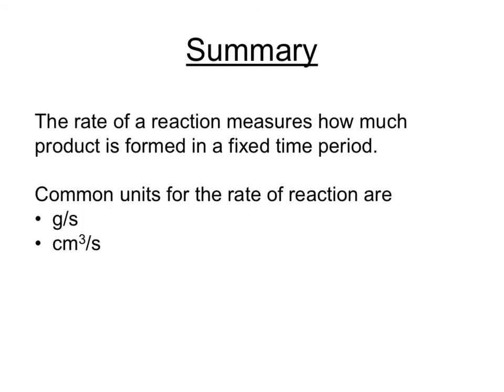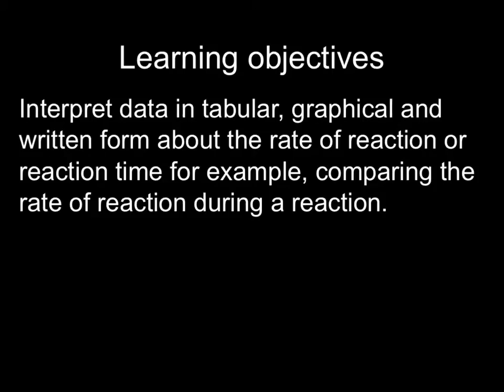And so in summary, the rate of the reaction measures how much product is formed in a fixed time period, or per second. And common units for rate of reaction are grams per second and cubic centimetres per second, where there's a gas involved. The next thing you need to be able to do is to interpret graphs of chemical reactions to tell when the reaction is fastest, slowest, when it's stopped, and so on and so forth.